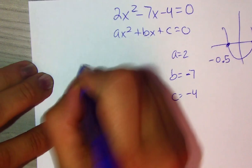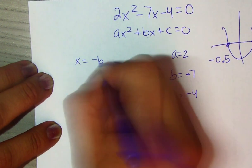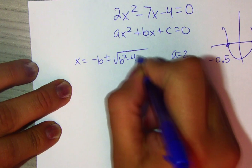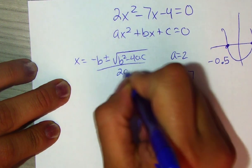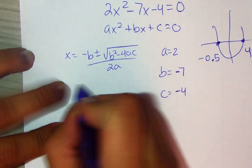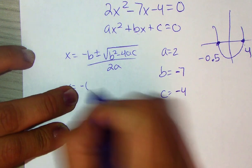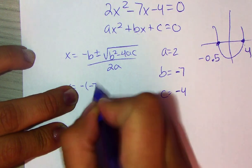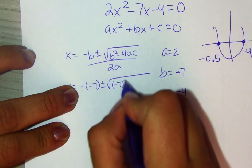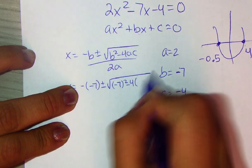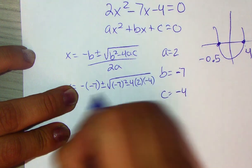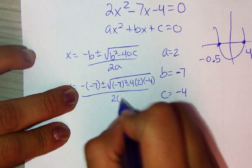And then next we're going to write the formula. Negative b plus or minus the square root b squared minus 4ac over 2a. And then we're going to substitute. So we're going to have x equals negative b, which is negative 7 plus or minus square root of b squared. So that's negative 7 squared minus 4 times a, which is 2, and times c, which is negative 4, over 2a. So 2 times 2.